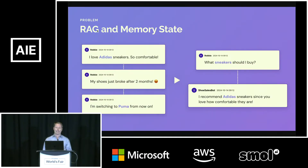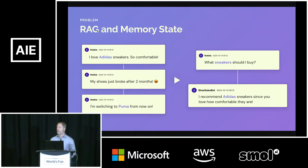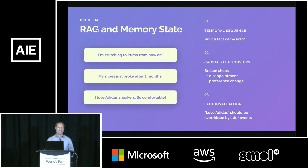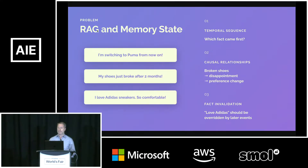Consider the stylized example where we have learned a brand preference for Adidas shoes. Unfortunately, Robbie's Adidas shoes fall apart, so he's rather unhappy and the preference changes. However, Robbie's follow-up question to the agent — asking what sneakers he should purchase — is most similar to the first Adidas fact. So if we're using a vector database, that fact may be at the top of the search results and the agent responds incorrectly. When using RAG, each fact is an isolated and immutable piece of content, and this is a real problem. The three facts on the left exist with no understanding of causality.